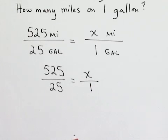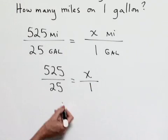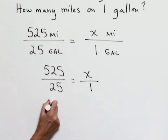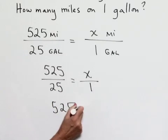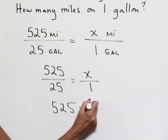The other thing that we can point out is we could at this point use the cross product. 525 times 1, which gives us 525, equals 25 times x.